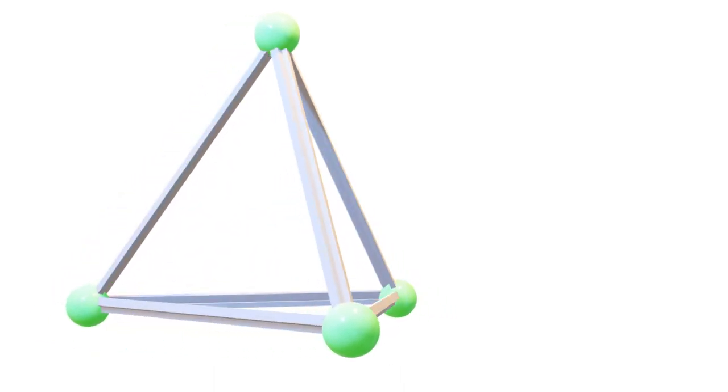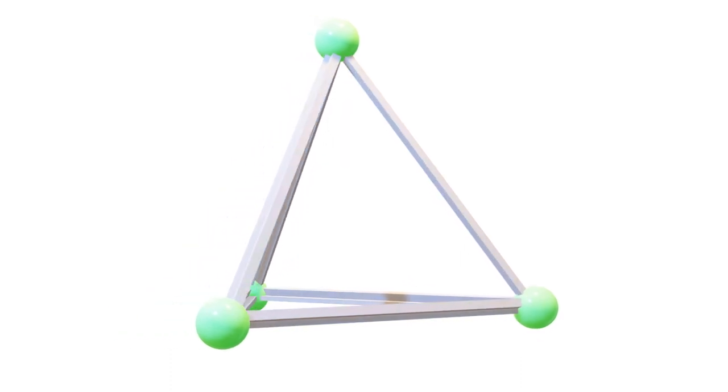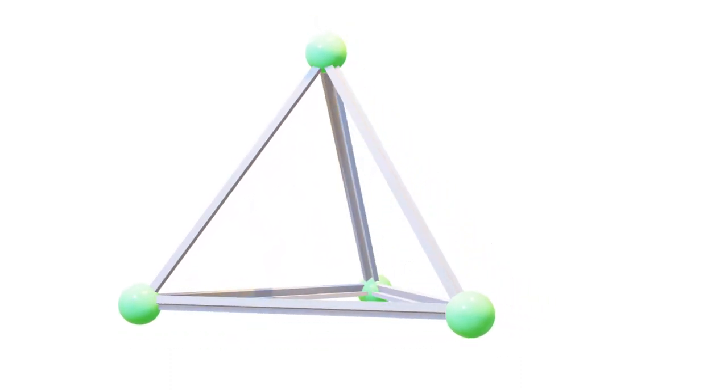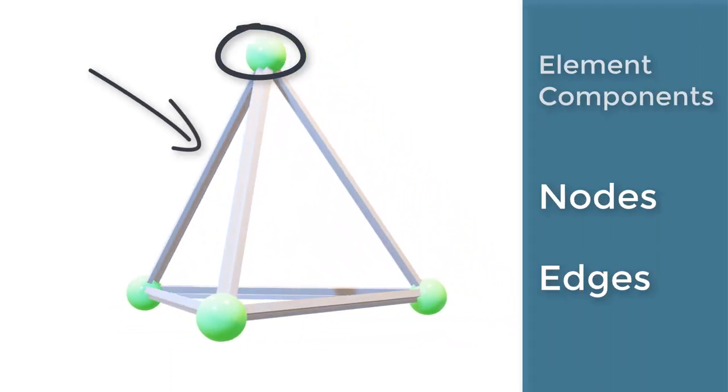These elements adjust in size to map the shape of the SOLIDWORKS model's geometry. Each element is comprised of two components: nodes and edges.